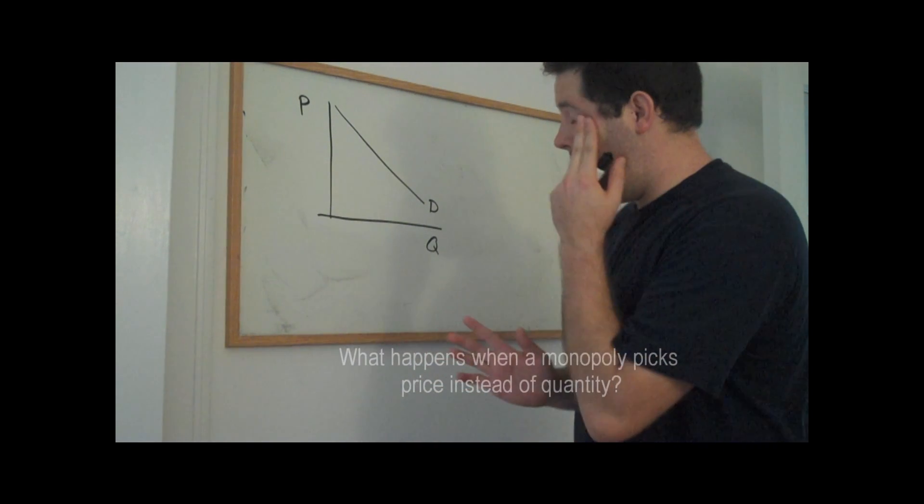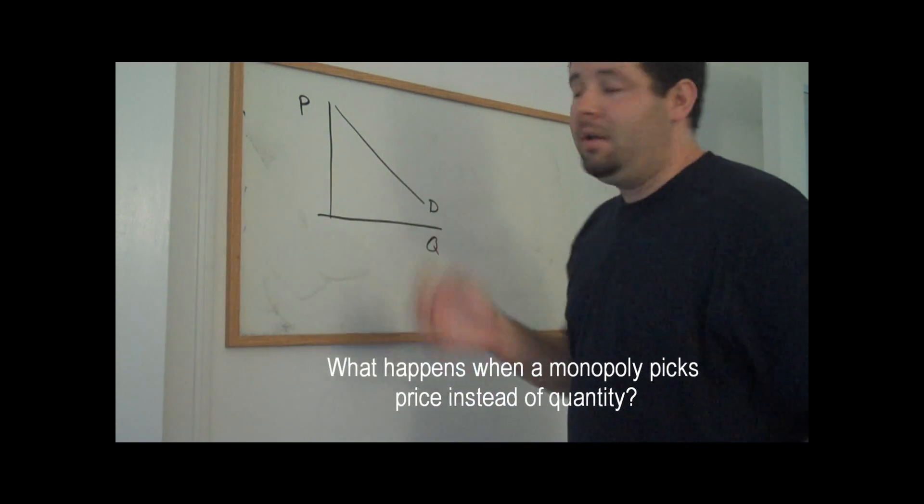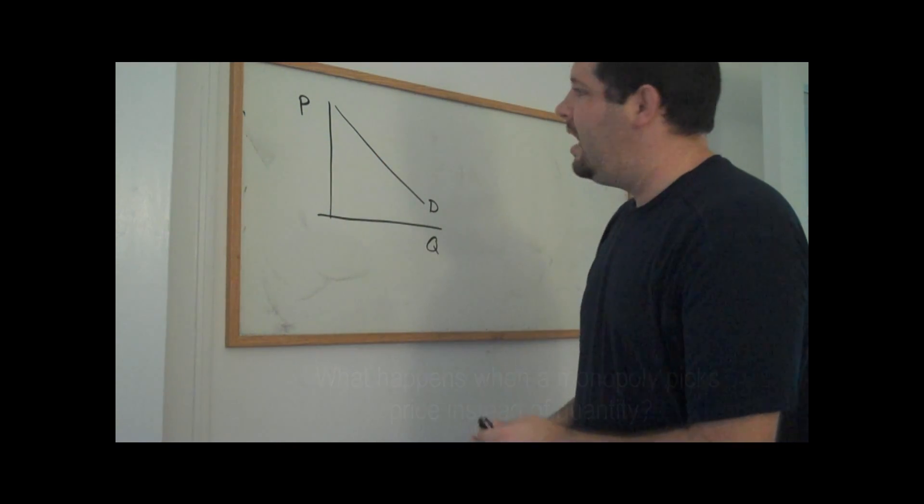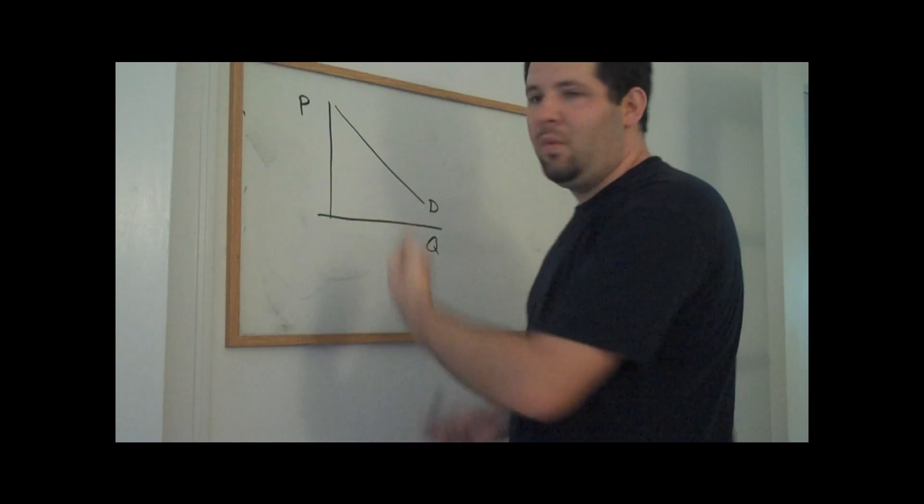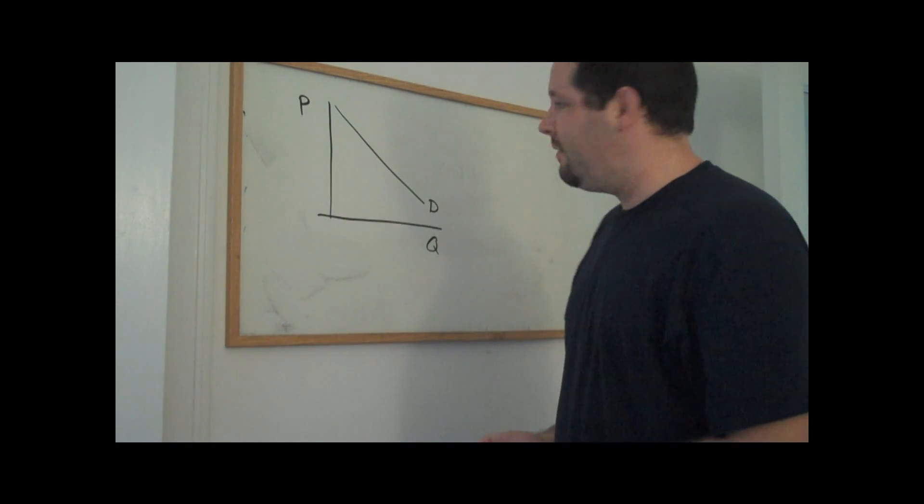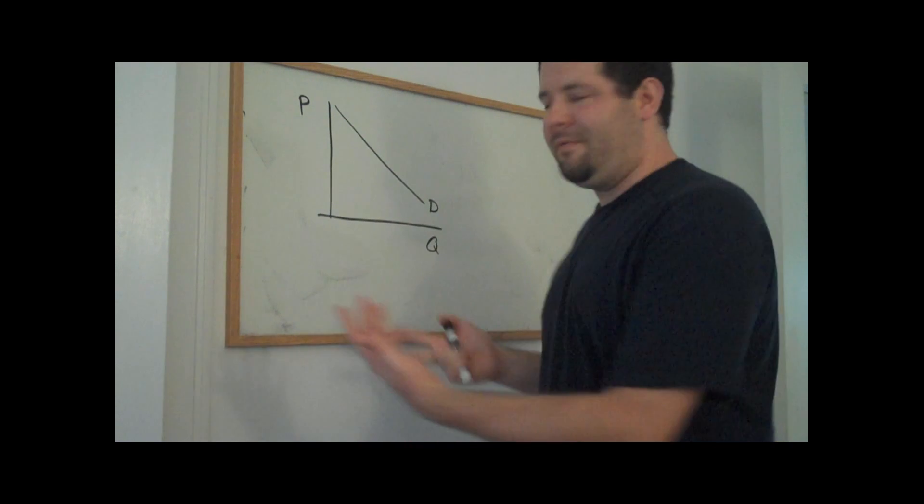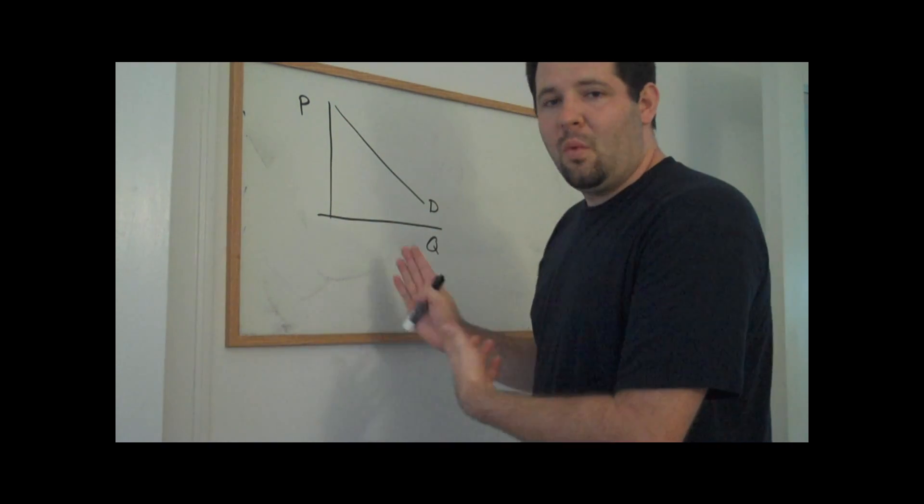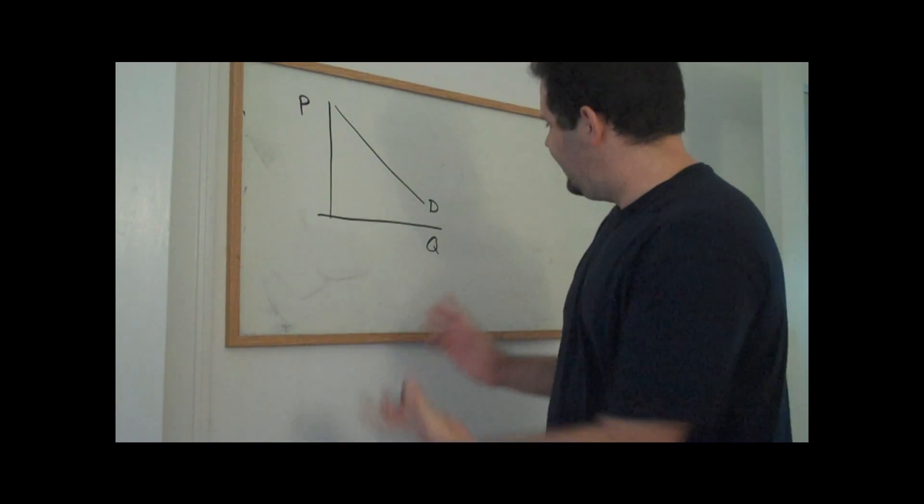The first thing that will happen is that if you're a monopoly, you're facing a demand curve. And it turns out that it's just perfectly equivalent that if you're a monopoly, you're going to pick the price that maximizes profit. Well, that price that maximizes profit is the one that's implied by the quantity that maximizes profit. That is where you set marginal revenue equal to marginal cost.